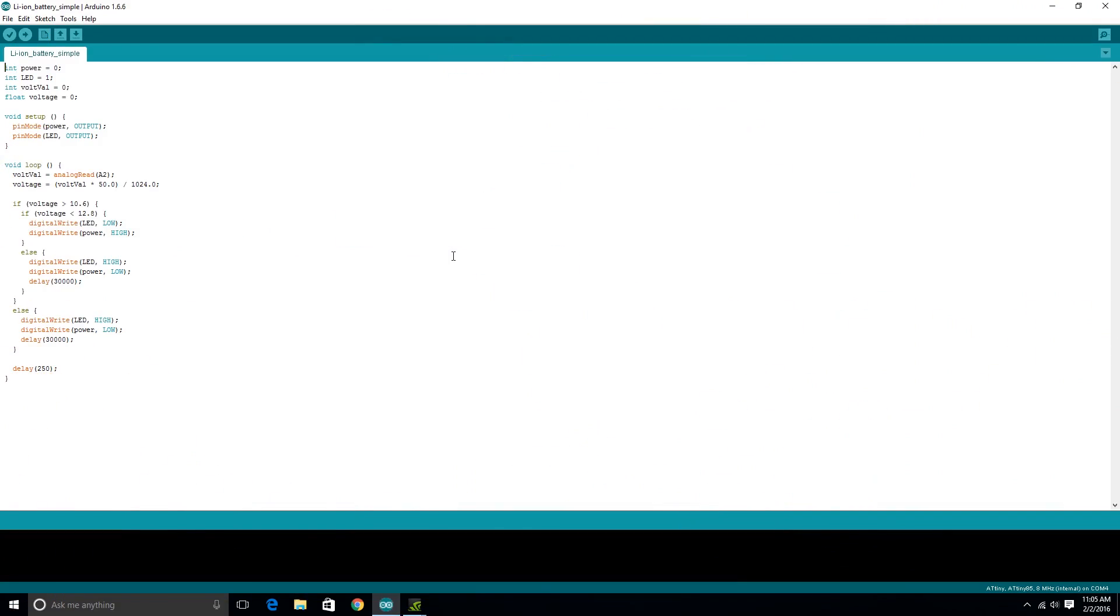All right. So here's our really quite simple code here. First off, just declaring a couple of integers up here. So power equals zero. That is the pin that that green LED as well as the MOSFET are hooked up to. LED, that's on pin one. That would be the fault LED. This is the value for the analog read. And then that's the actual voltage. And you just set up both of these as outputs, both of our pins. And then we're setting this volt val equal to analog read A2. And then we actually convert that, the 0 to 1024 into a voltage that this thing can recognize.